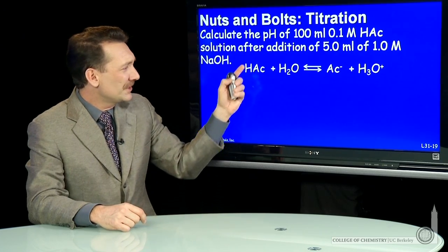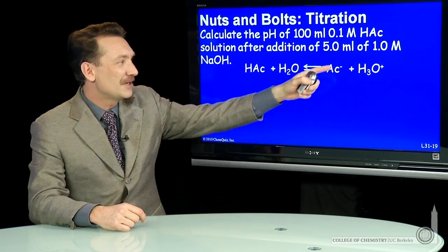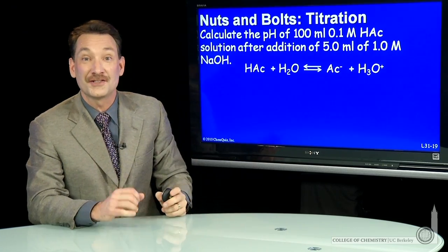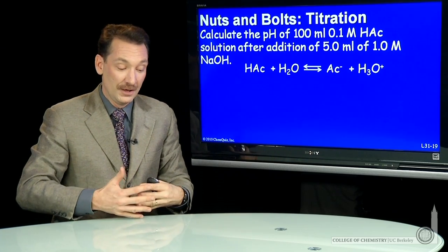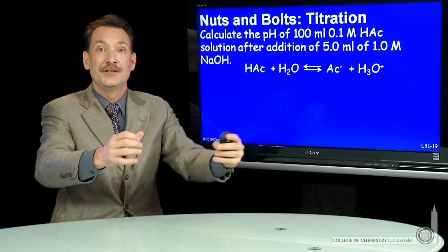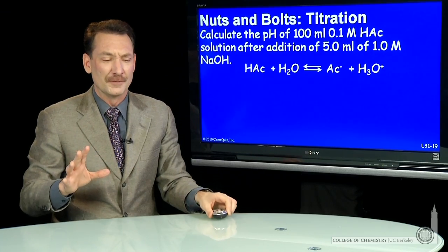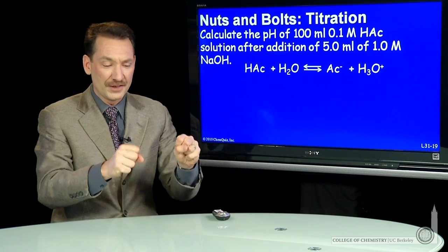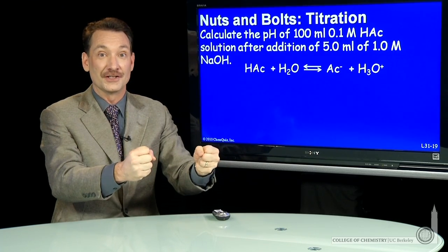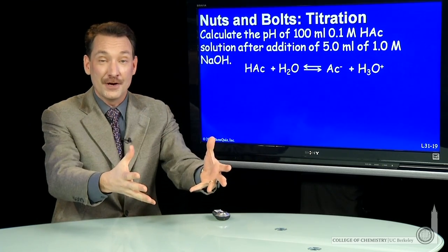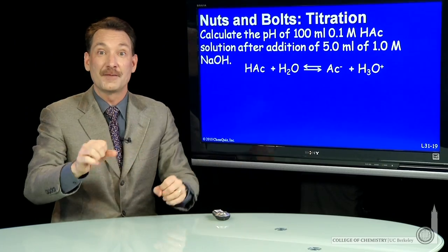But we want to find out, what are the initial conditions? How much HAc, how much Ac minus, and how much H3O plus are there at a point? And then we'll allow the equilibria to expand. This is how you do equilibrium calculations. You find a point that you can nail down, say these will be my starting conditions.